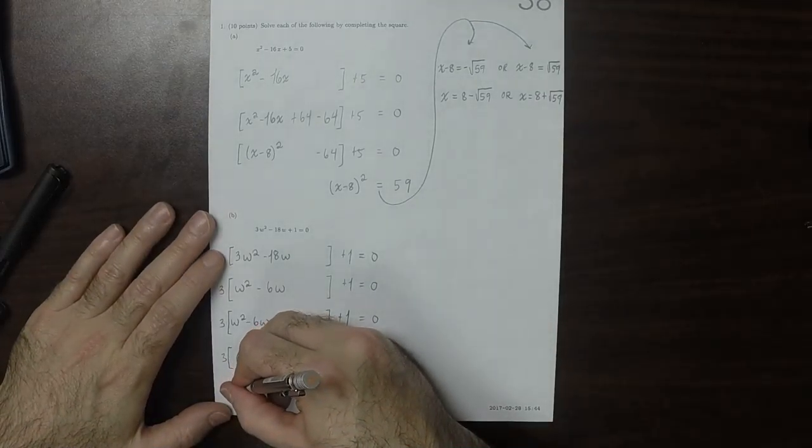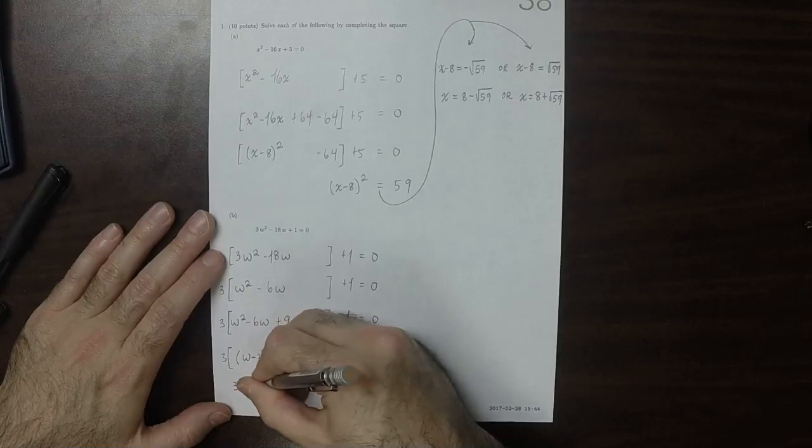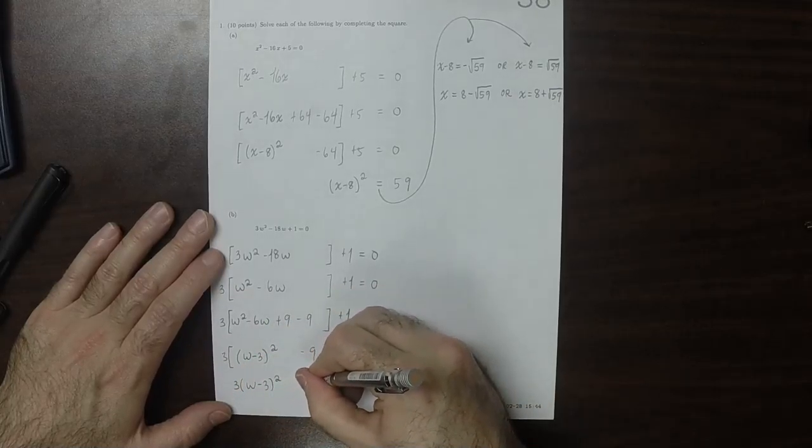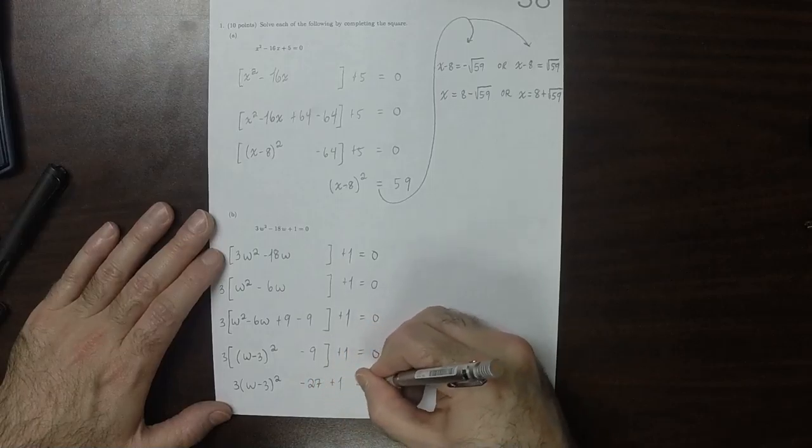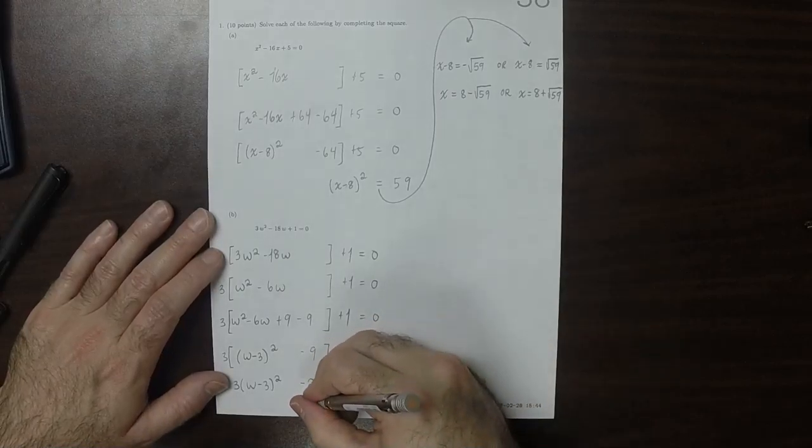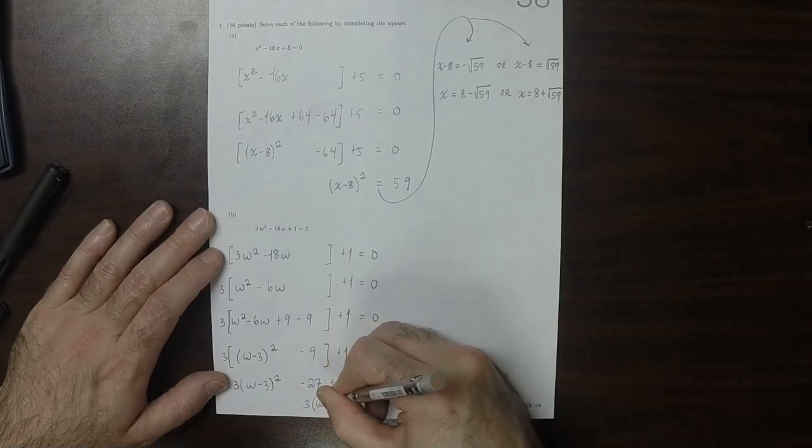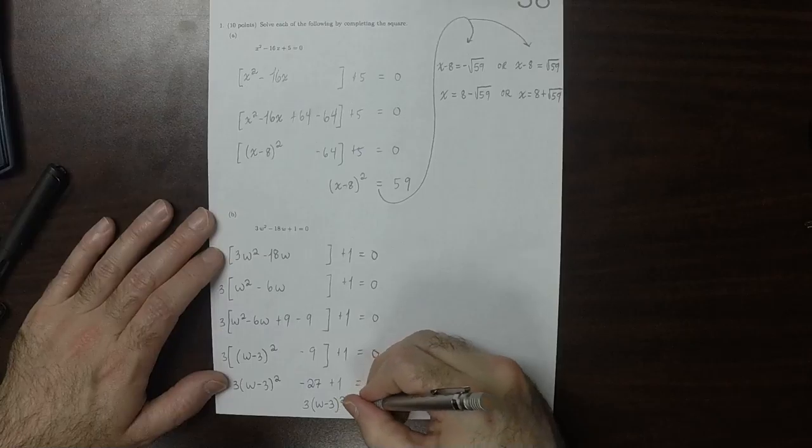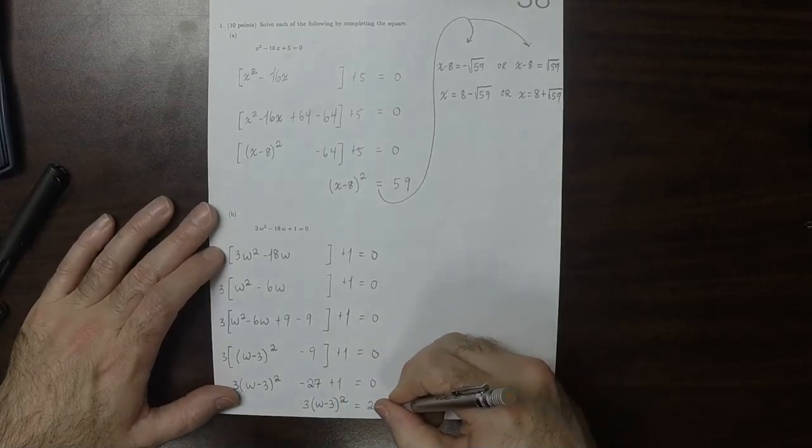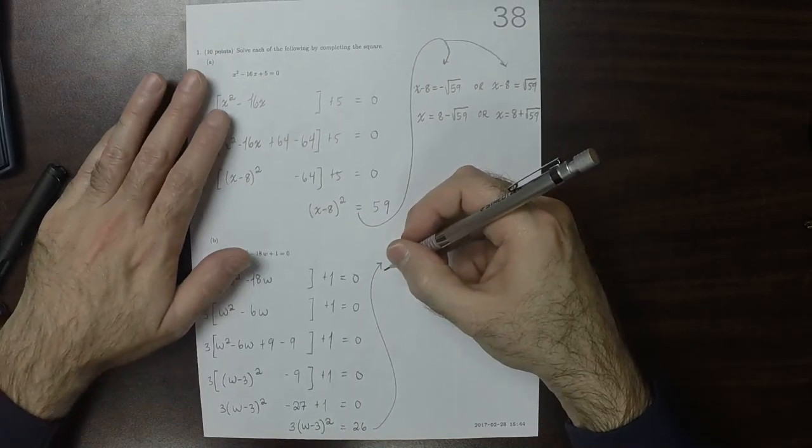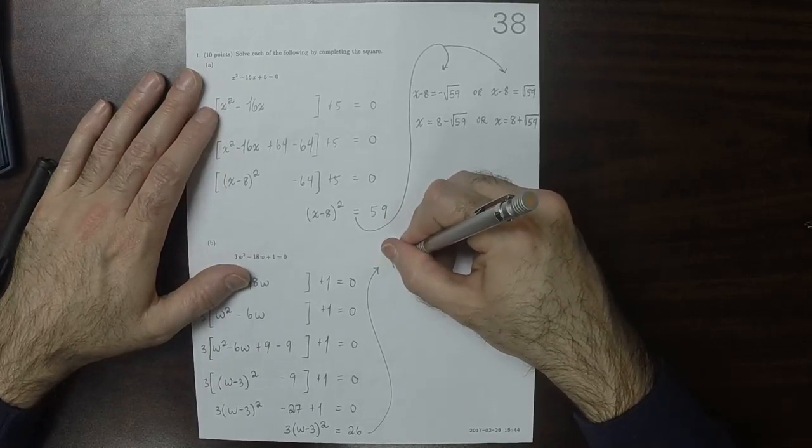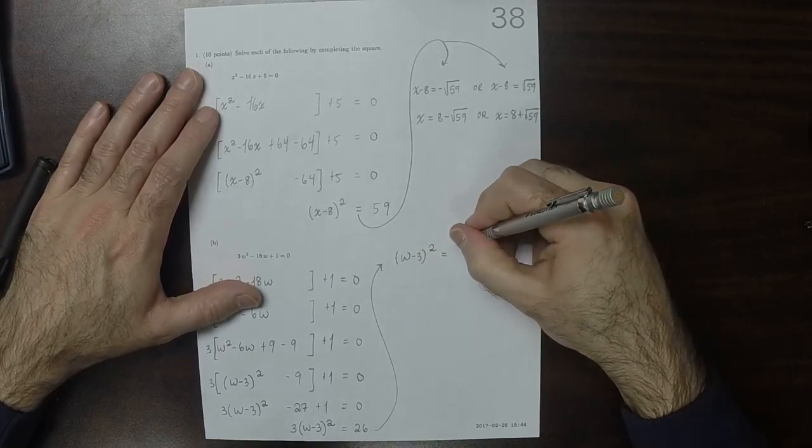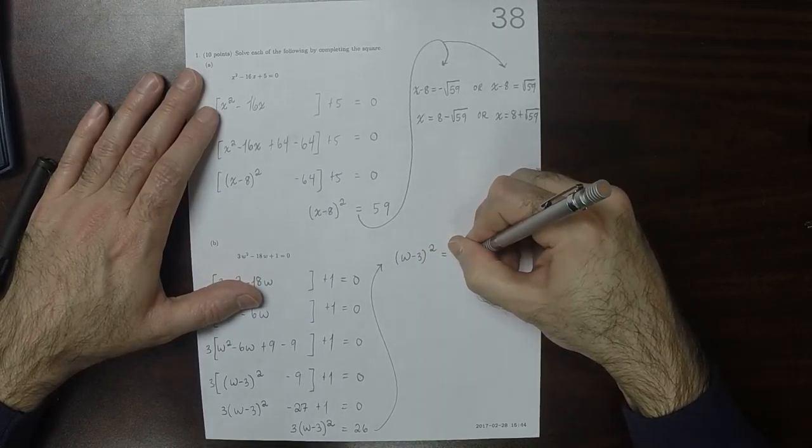So that would be 3w minus 3 squared, minus 27 plus 1 equal to 0. So 3w minus 3 squared, and then equal to 26. Minus 26.